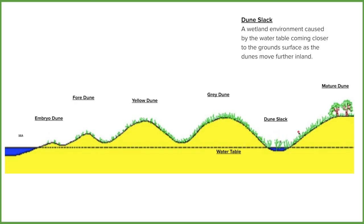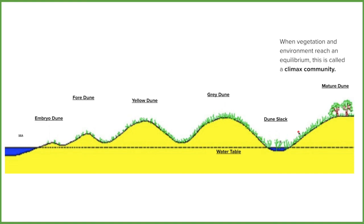And finally we've got the mature dunes — these are what we'd call the climax community. This is the vegetation we'd expect to find in a temperate deciduous woodland, which is what the UK is. So we're going to find some trees in there along with natural vegetation for our area — less grasses and more shrubs.